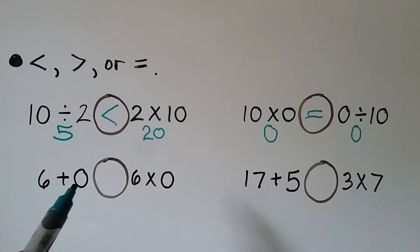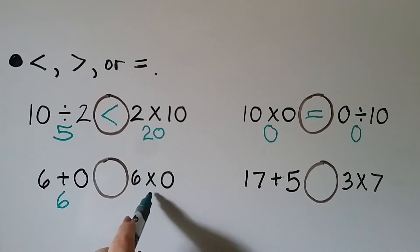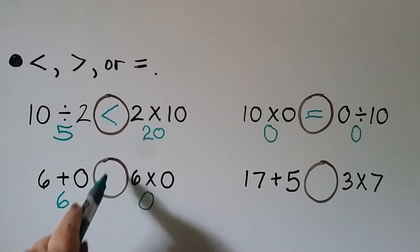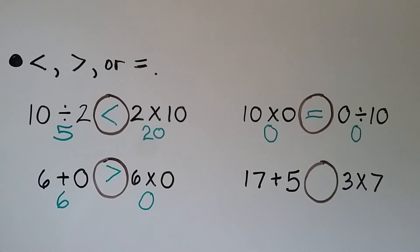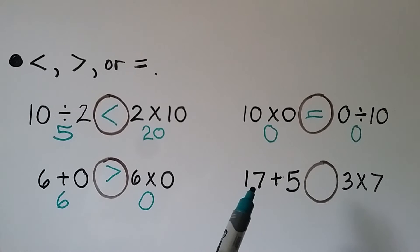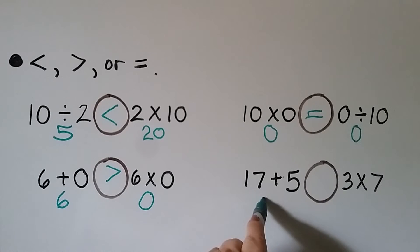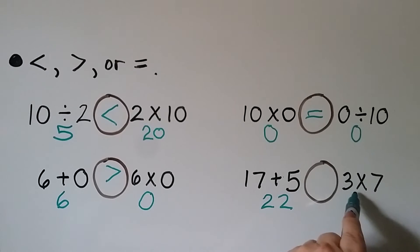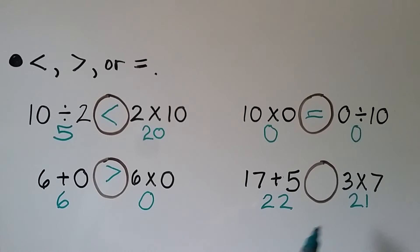Here we have 6 plus 0, which is 6. And here we have 17 plus 5 — we start at 17 and count on 5: 18, 19, 20, 21, 22 — so this side is 22. And 3 times 7 is 21.